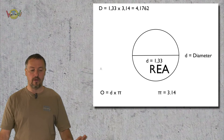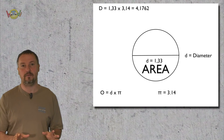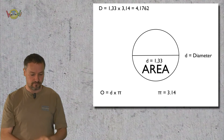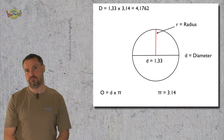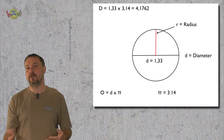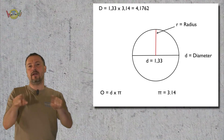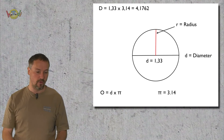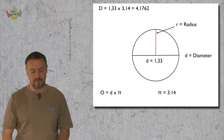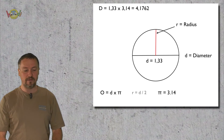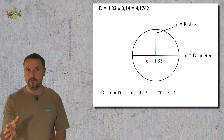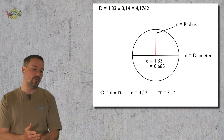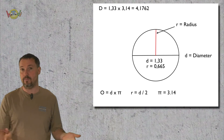We can also calculate something called area. An area is the space inside a shape. Why do we need an area? Maybe you want to build a swimming pool — you need to know how big it is, and if you want the volume you go from there. For the area we need the radius. The radius is simply the diameter divided by two. We had 1.33 as a diameter — divide by two and we have 0.665.